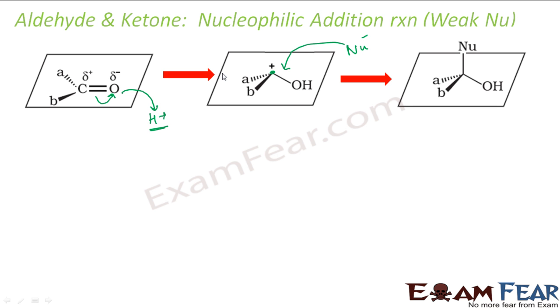So this nucleophilic addition reaction can happen by two ways. One is when the nucleophile is strong - the nucleophile attacks first. The other is when the nucleophile is weak - H+ comes first, creates a carbocation, and then the nucleophile attacks the carbocation.